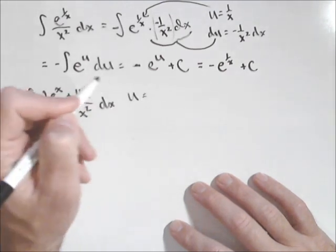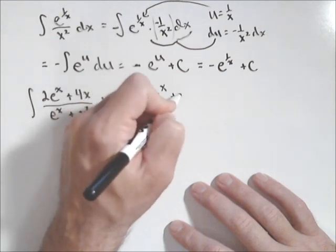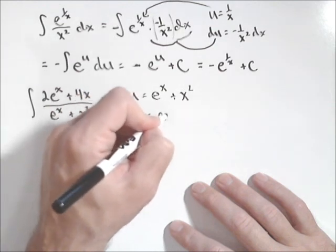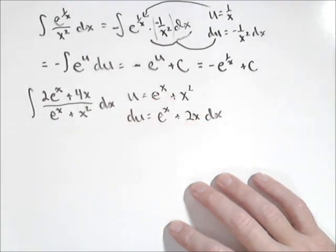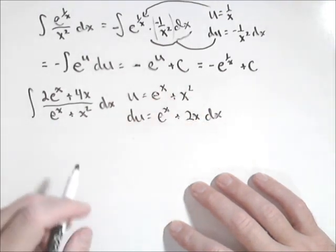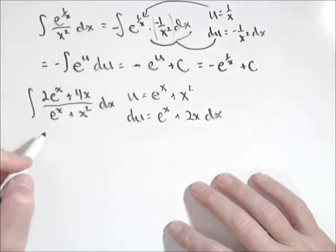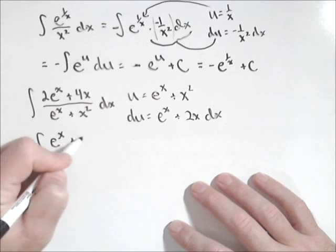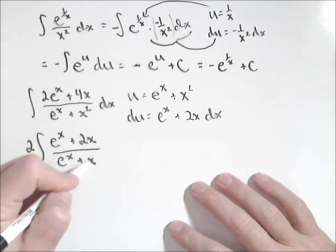So I'm going to choose u to be the denominator, which is e to the x plus x squared. Because then my du is e to the x plus 2x dx. Well, I don't quite have that in here, so what I'm going to do is I'm going to factor a two out of the numerator. So if I factor two out, I'm just going to pull it completely out, and I have e to the x plus 2x, all over e to the x plus x squared dx.